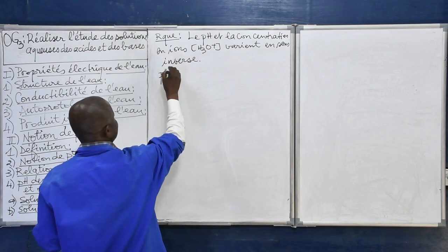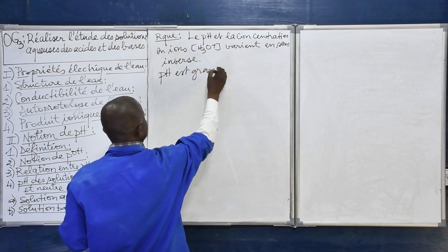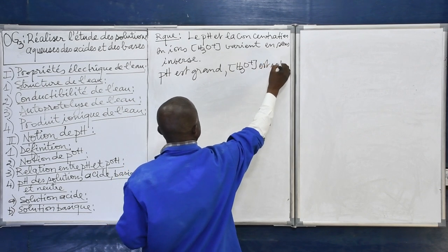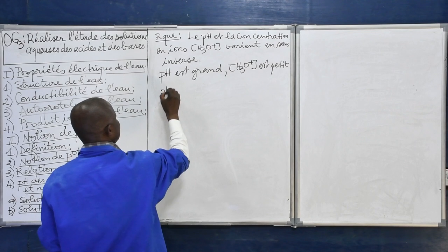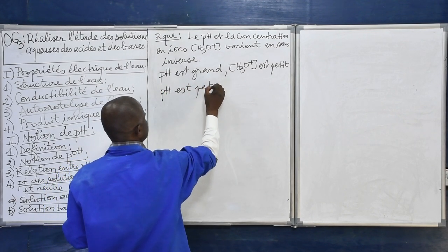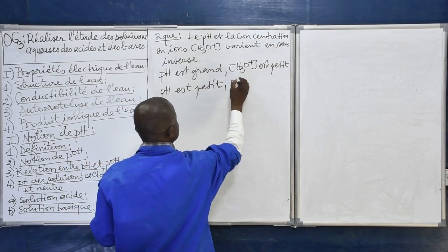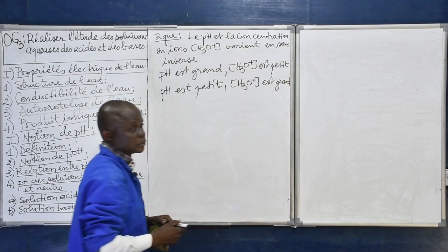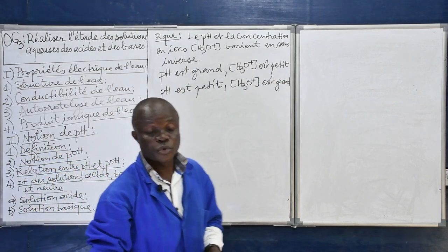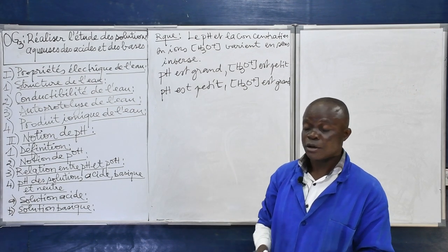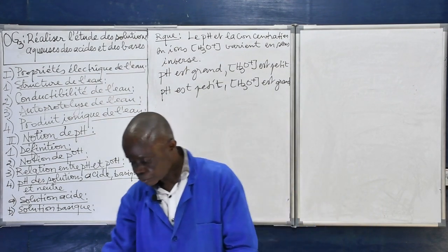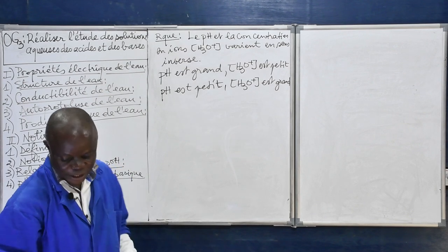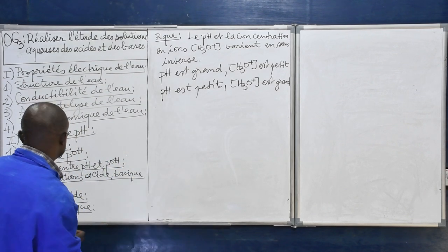Lorsque le pH est grand, la concentration en ions H₃O⁺ est petite. Et lorsque le pH est petit, la concentration en ions H₃O⁺ est grande. La concentration en ions H₃O⁺ et le pH d'une solution varient en sens inverse.